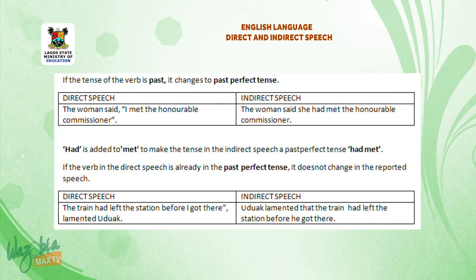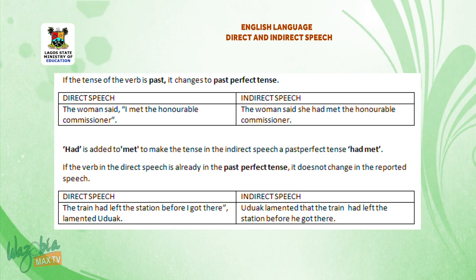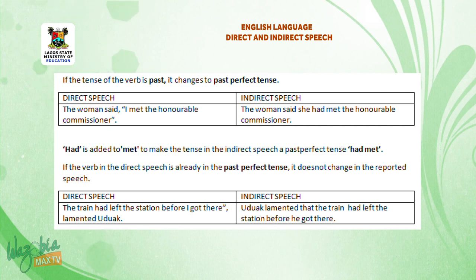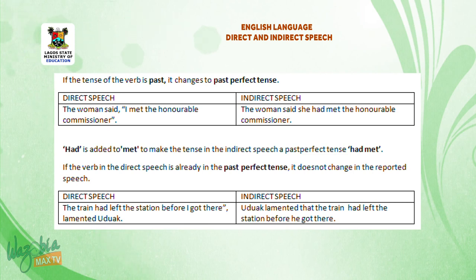Here, the tense of the verb is past — it changes to past perfect tense. The woman said, 'I met the honourable commissioner.' 'Had' is added to 'met' to make the tense in the indirect speech a past perfect tense: 'had met'.